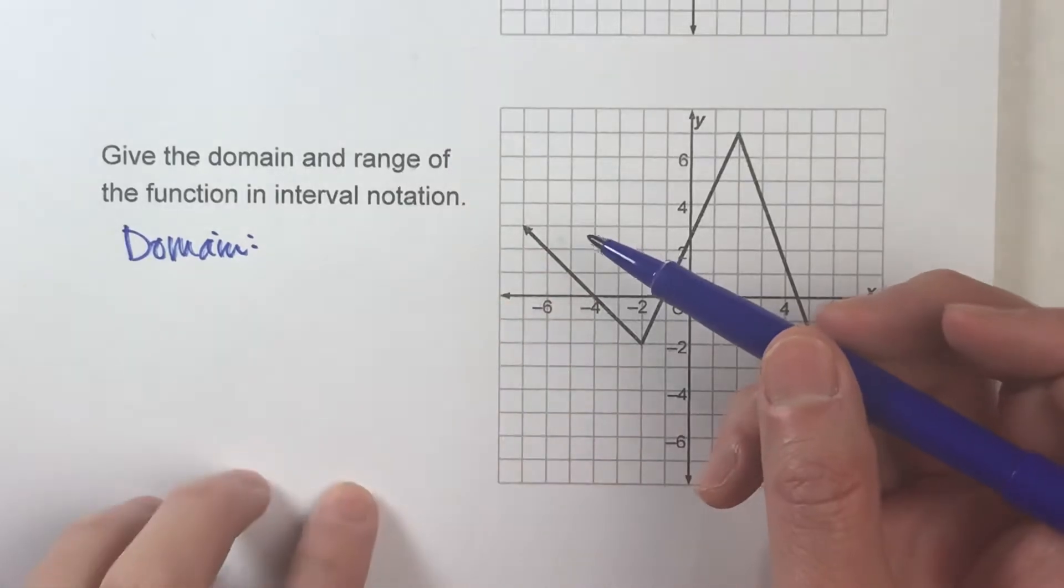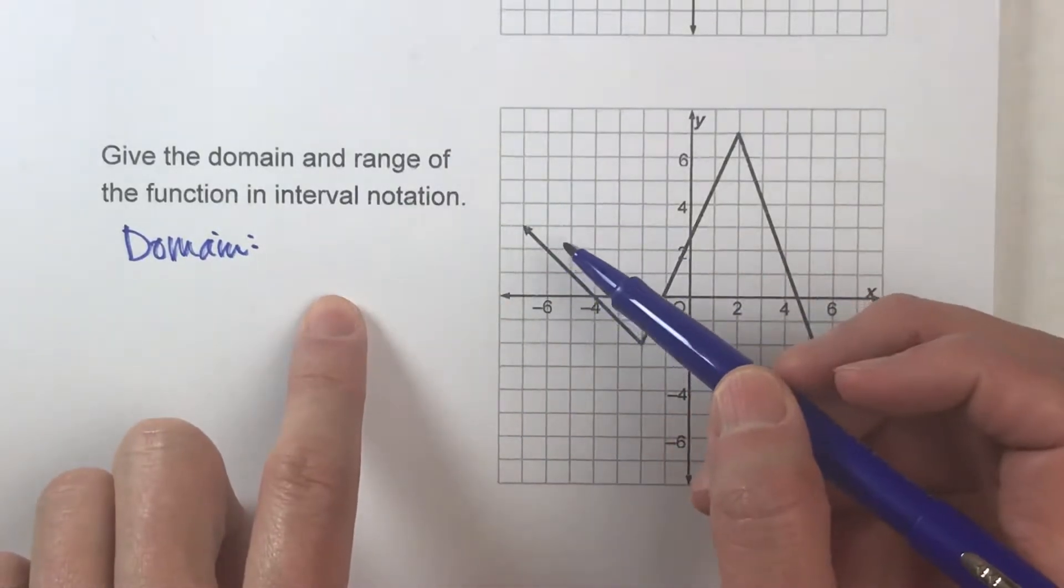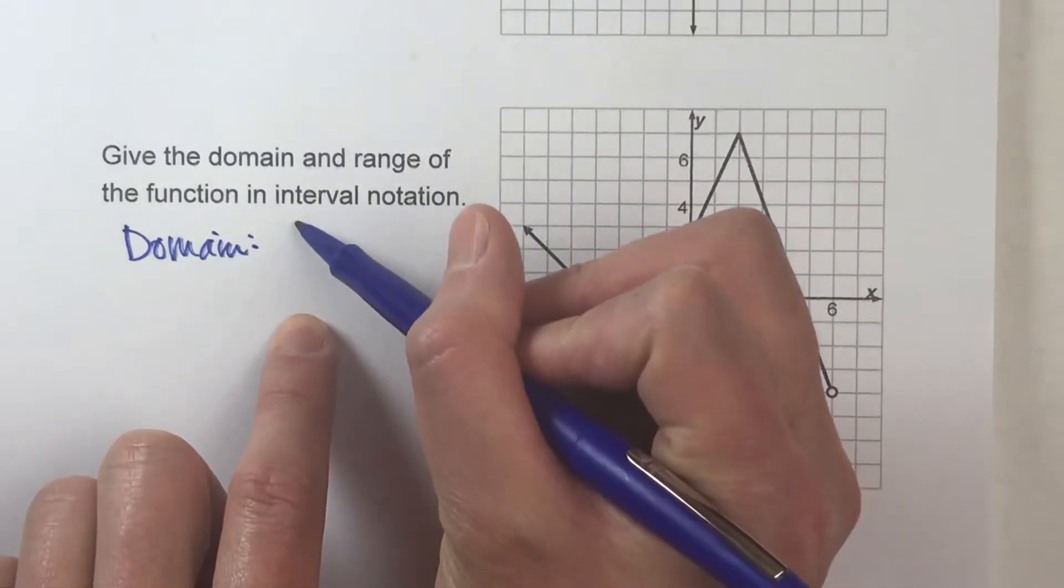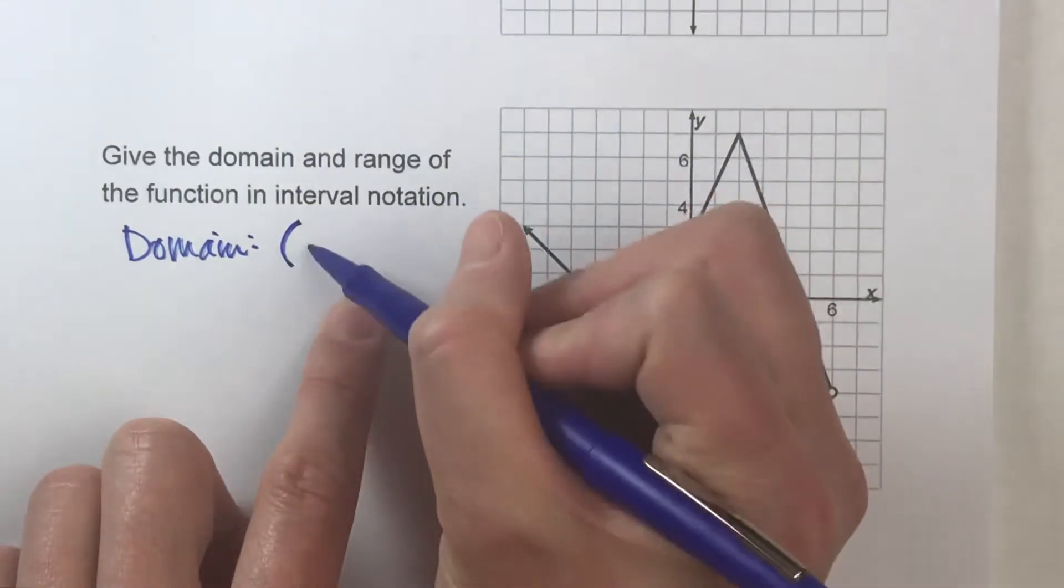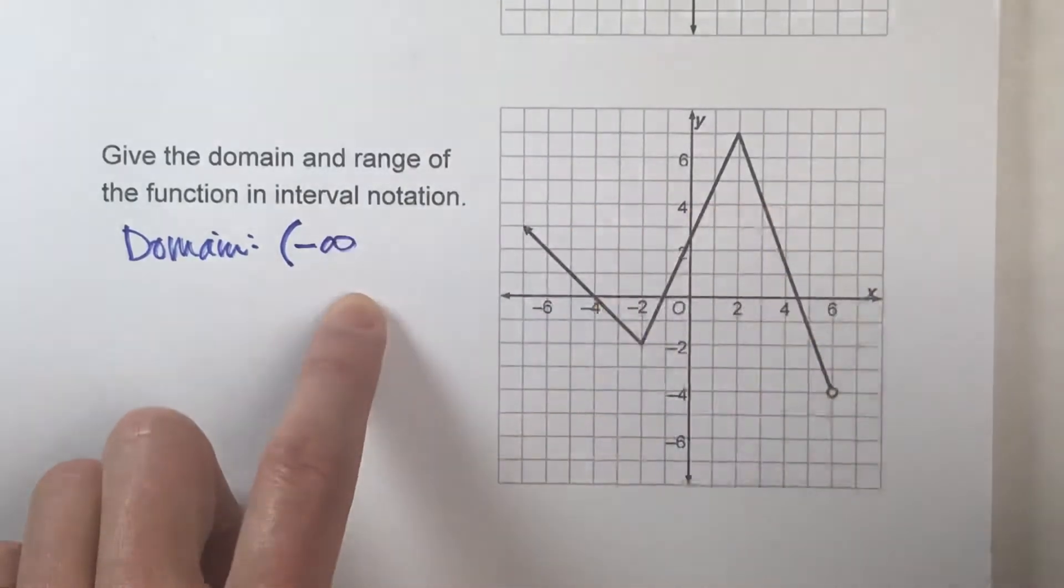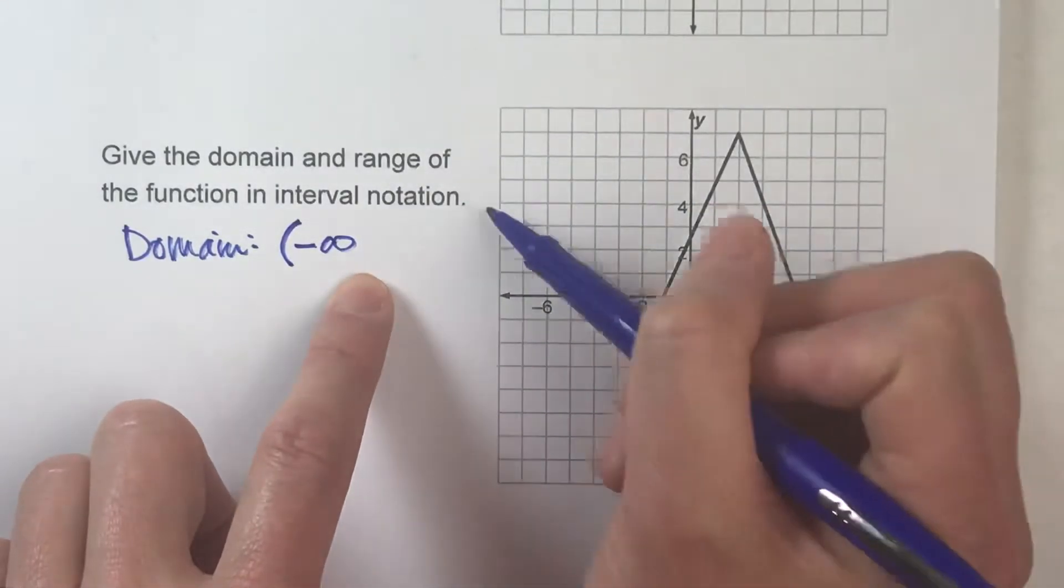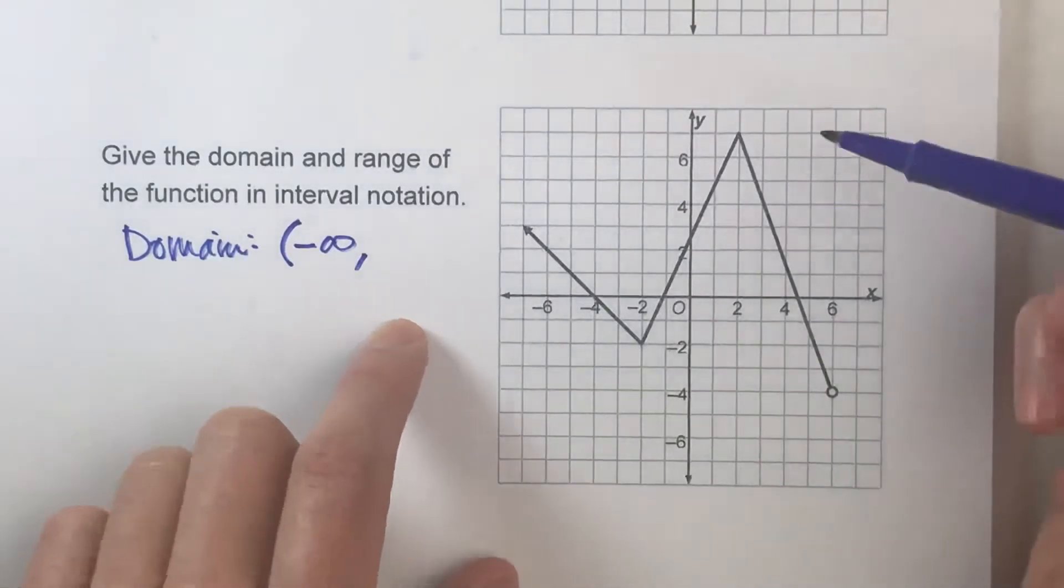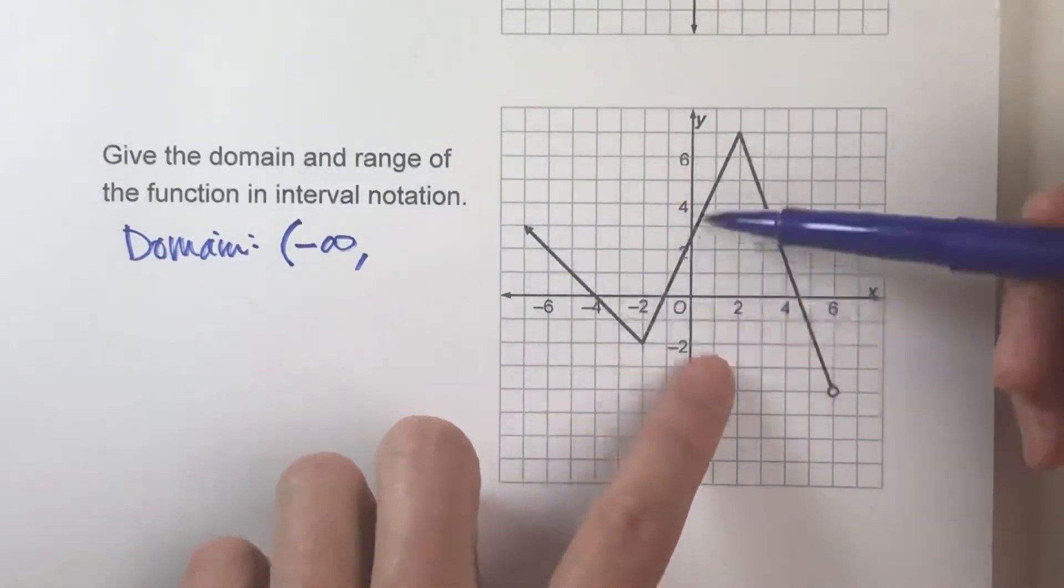So we'll start it at negative infinity. And just like we said before, x cannot actually be negative infinity. It can get there, get close to it, but not actually be it. So we're going to have to use the parentheses for that. So it's going to start there. What's the biggest possible x value? Well, if we go all the way over here, notice it gets up to here.